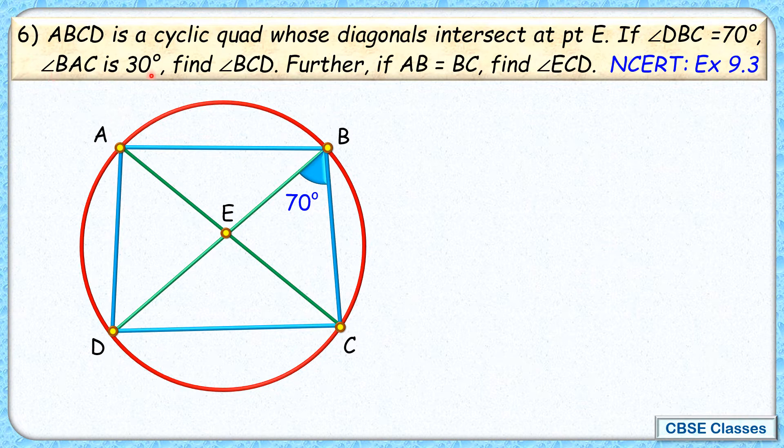Angle BAC is 30 degrees. So angle BAC, this angle here is given as 30 degrees. AB length equals BC length. So this length AB equals BC.